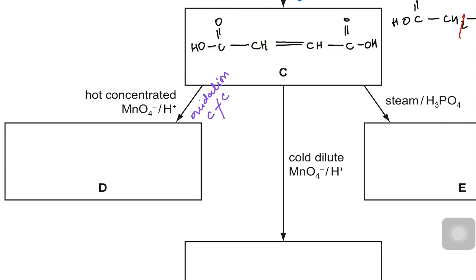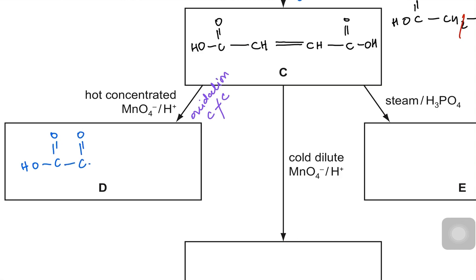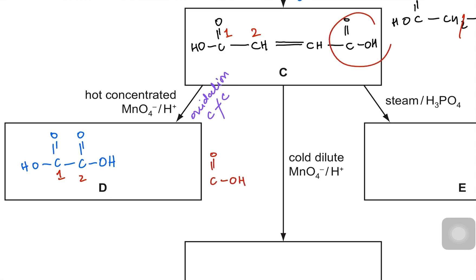Remember that the bond is separated. The carboxylic acid on the left remains the same. When the double bond is broken, the CH is converted into another carboxylic acid. So you will receive this molecule — carbon number one and carbon number two — and the other portion of the structure does exactly the same thing.